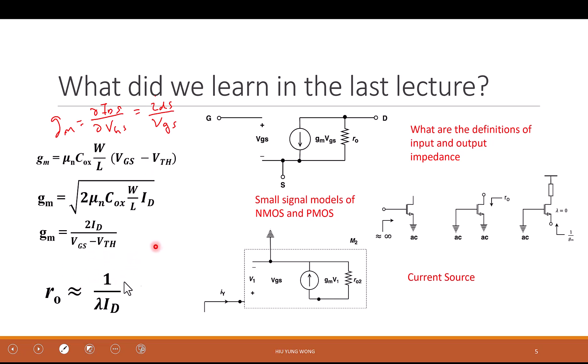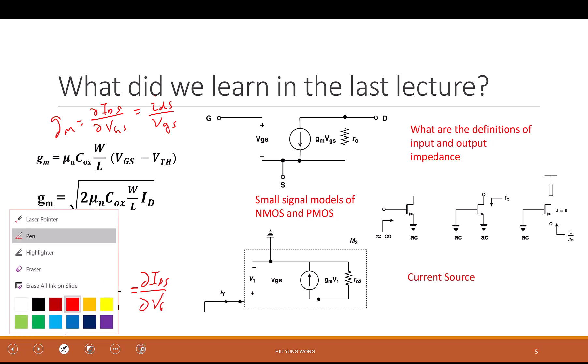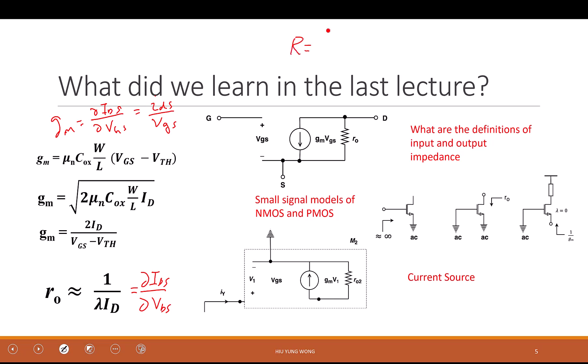We also have another quantity called the output impedance, R_out. The definition is, do you remember what is that? First of all, what is the definition of resistance, and then which terminal it is about? How much you change the drain voltage. For a given change of the drain voltage, you want to see how much the drain current change. Just like what is a resistor, it's again just the delta V over delta I. That is a resistor.